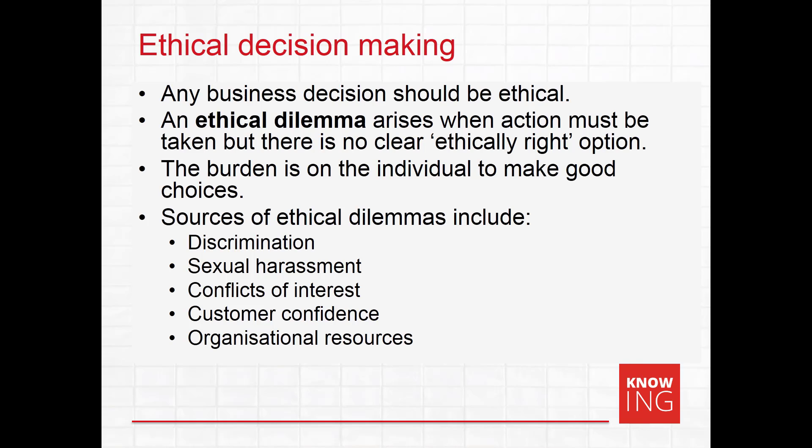The difficulty is that what is considered ethical or moral changes from person to person and situation to situation. Philosophers have classified different kinds of value systems: utilitarian, where decisions are made that produce the greatest good for the greatest number of people; moral rights, where ethical decisions are those that best maintain and protect fundamental rights such as the right to privacy; and a justice model, where ethical decisions are concerned with distributing benefits and harms in a fair or impartial way.